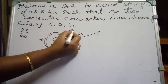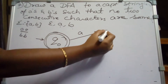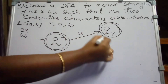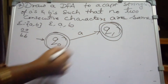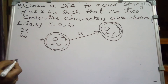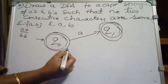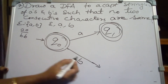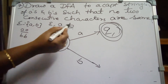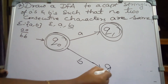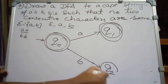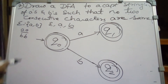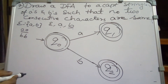The input can be A or B. On A it goes to state Q1, which is a final state since a single A must be accepted. On B it goes to state Q2, which is also a final state since a single B also satisfies the condition of no two consecutive same symbols.